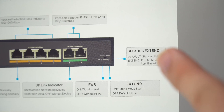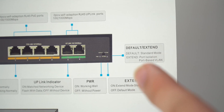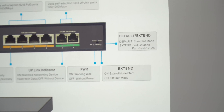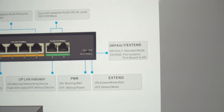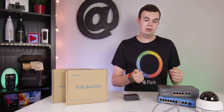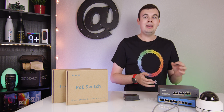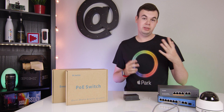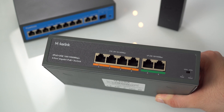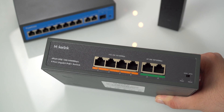E+V mode stands for Extended and VLAN. With that enabled, you can get power up to 250 meters. However, enabling it also activates VLAN, which means each port becomes independent from the others — so if you plug something into port one, you can't access it through port two.